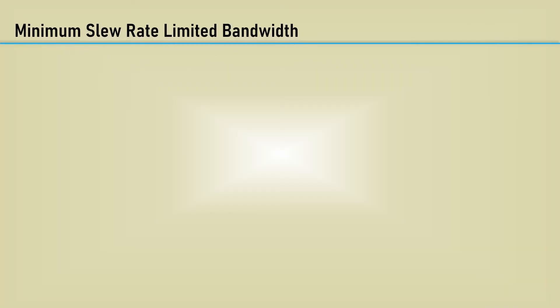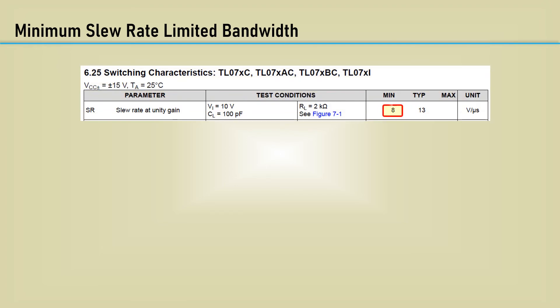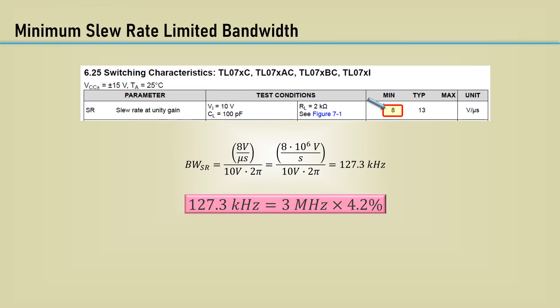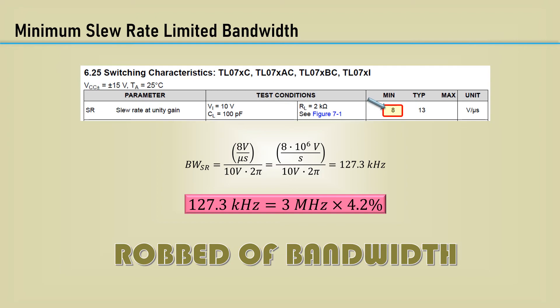We did the observation based on the slew rate we measured. The datasheet has a minimum slew rate of only 8 volts per microsecond. That gives us a slew rate limited bandwidth of only 127.3 kilohertz. That's just 4.2% of the unity gain bandwidth at unity gain.